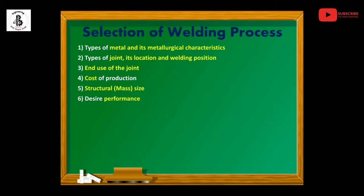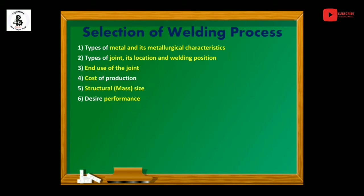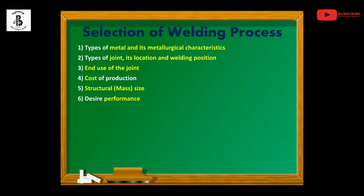The sixth factor is desired performance. Welding is considered a permanent joint, so some desired output is required under loading conditions. Those loading conditions may include high temperature, pressure, tensile load, compression load, and fatigue loads. According to the requirement of desired performance, the welding process is selected.